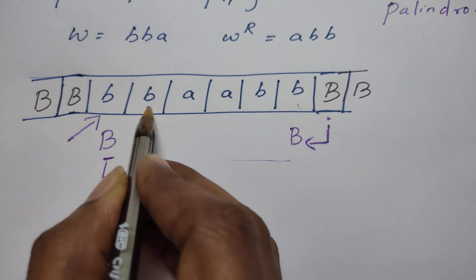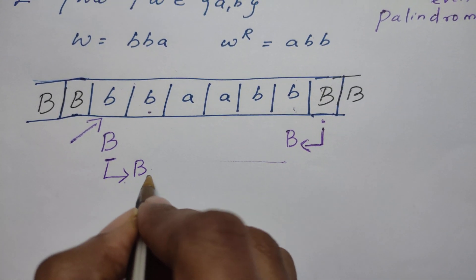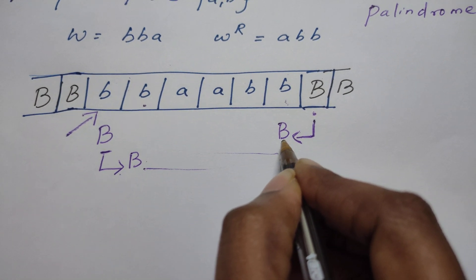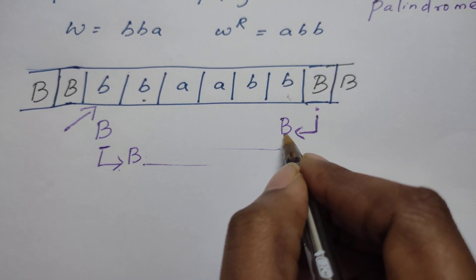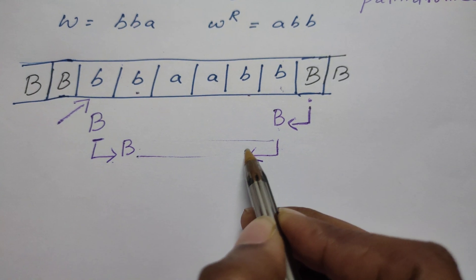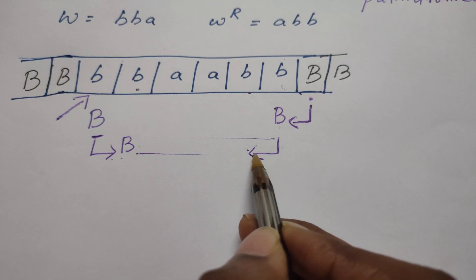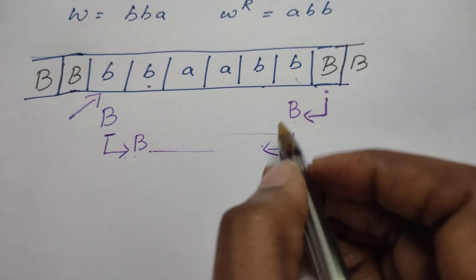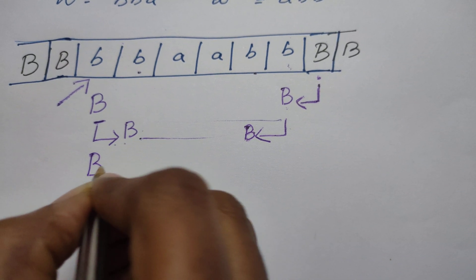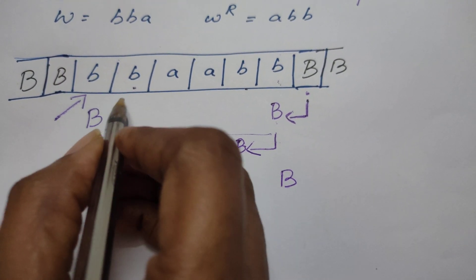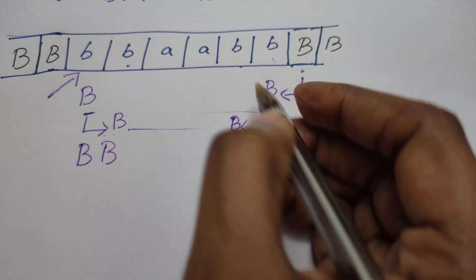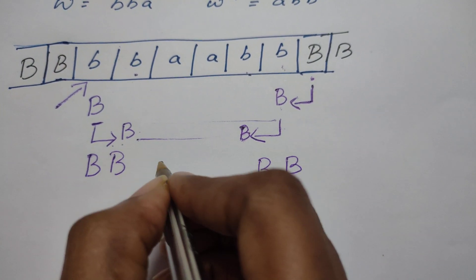When moving left, if the matching symbol is found it is replaced by blank, then the head continues moving left until it finds the blank on the left side. When it finds that blank, the direction changes back to the right. The head reads the next symbol — say b — replaces it by blank, moves right until it finds a blank, then changes direction left again expecting the same symbol b.